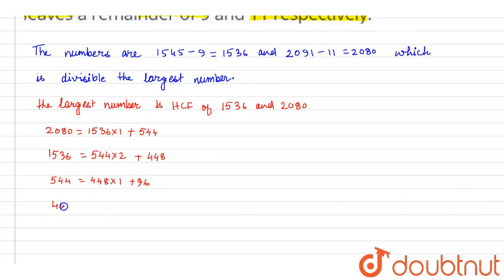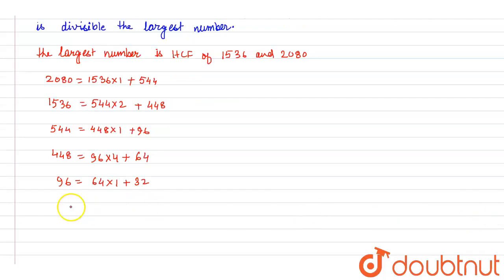Now 448 can be written as 96 times 4 plus 64. Now 96 can be written as 64 times 1 plus 32. Now 64 can be written as 32 times 2. That means HCF is 32.